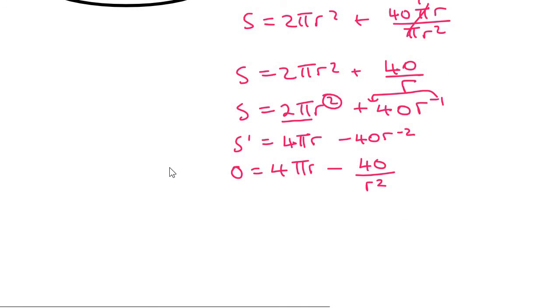What I would then do is take the 40 over R squared to the other side, and then I would multiply the R squared across. So you end up with 4 pi R cubed. I would then get the R cubed alone by dividing by 4 pi.